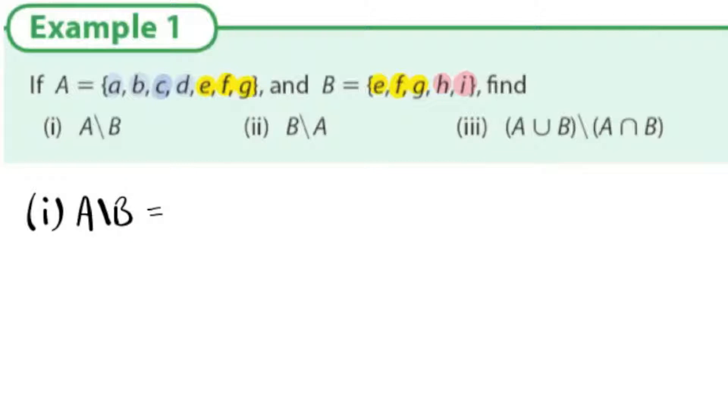So what's A not B? These are the things in A not in B which are a, b, c, and d, the things in blue.